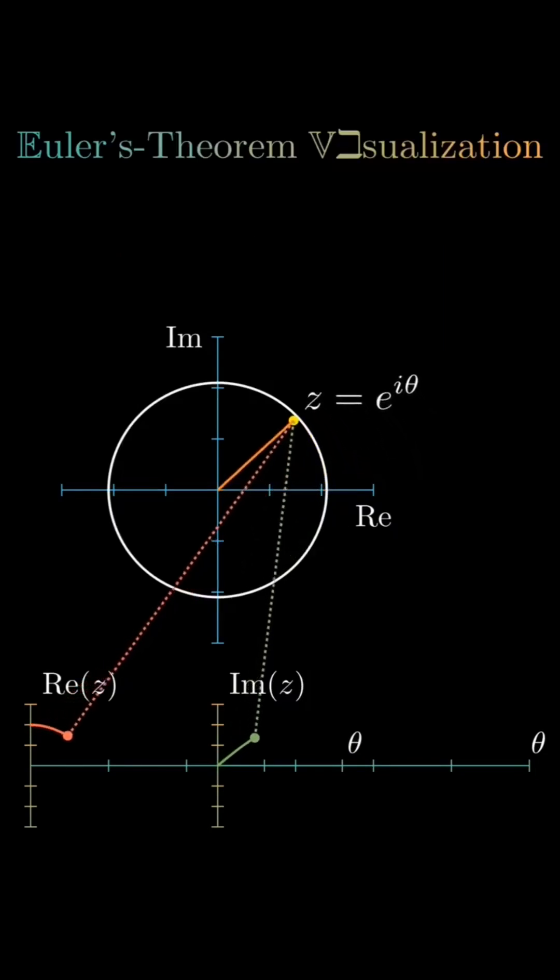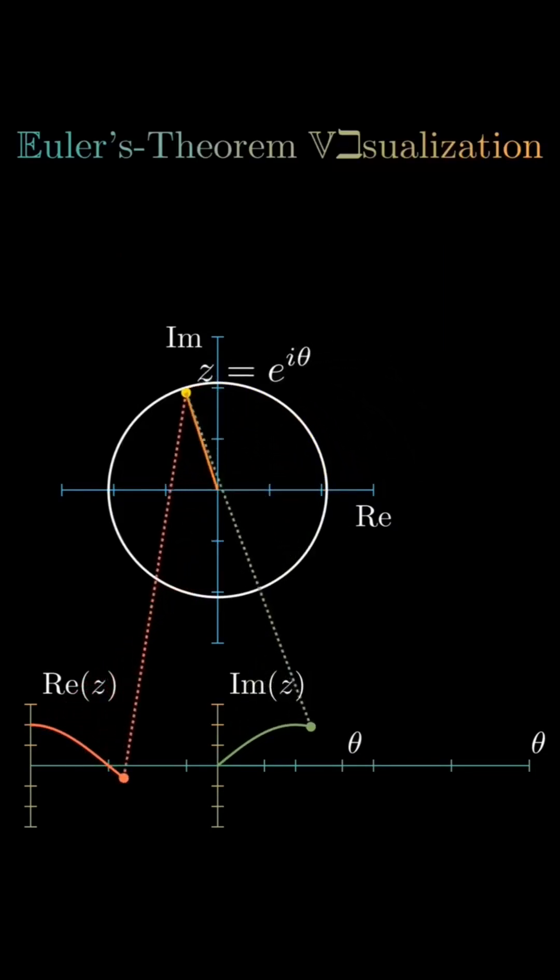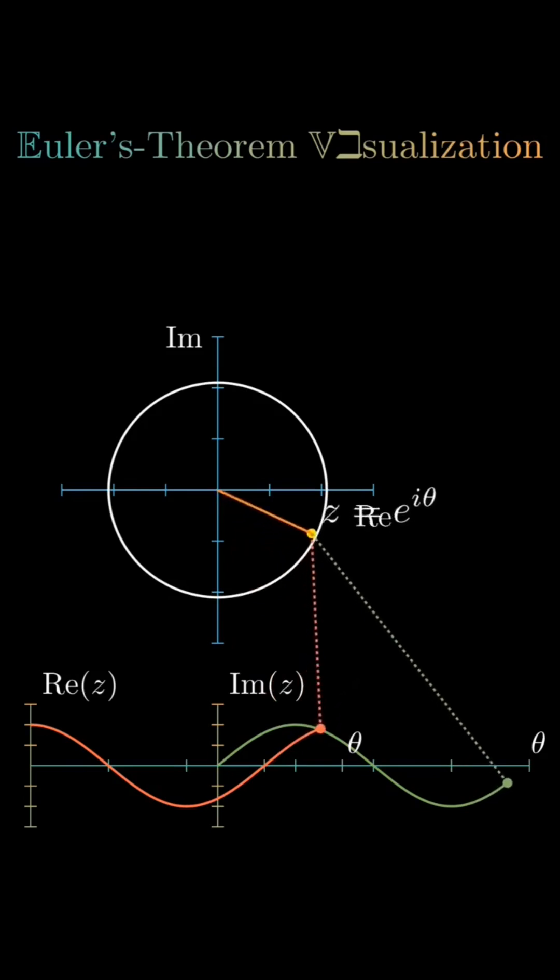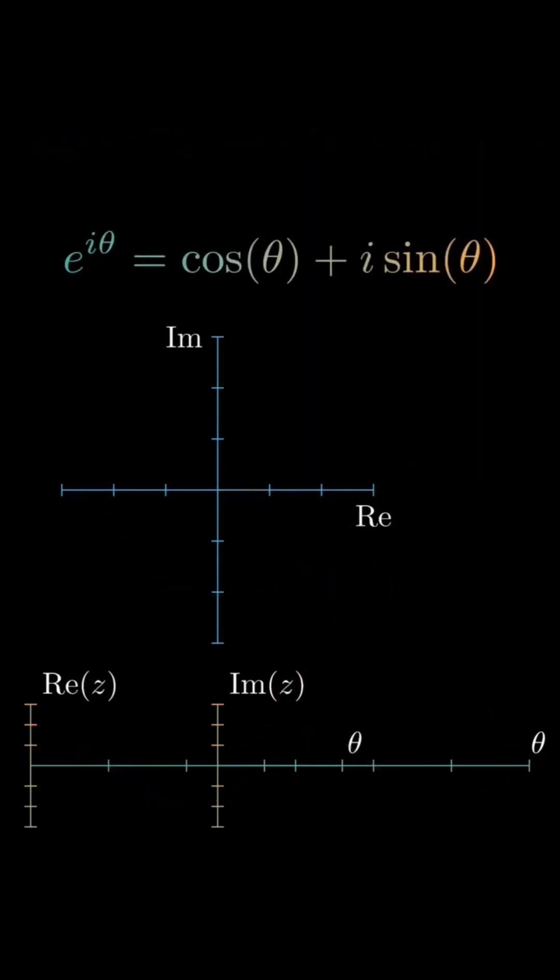Euler's formula is important because it is a fundamental bridge between algebra, geometry, and calculus. It is used in physics and engineering, you name it, even in signal processing.